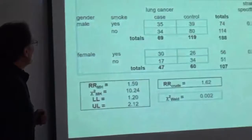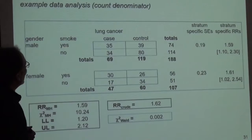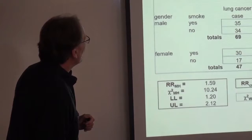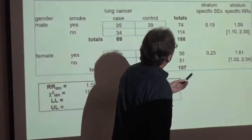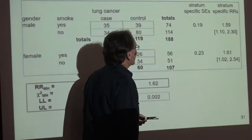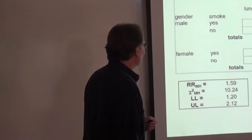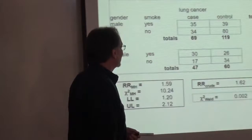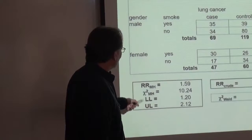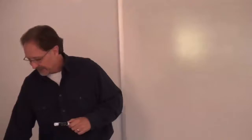Let's take a look at gender as a potential confounding variable and smoking behavior in relation to lung cancer — whether you smoke or don't smoke, whether you're male or female. Here are our stratum-specific relative risks, both significantly elevated. It doesn't look like there's much effect modification. The risk for males and females looks about the same for smoking. Our Mantel-Haenszel relative risk and our crude relative risk are pretty similar — obviously homogeneous, and this is significantly elevated when controlled for gender.